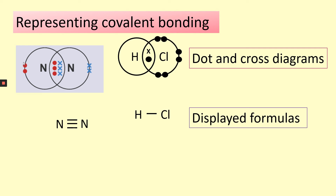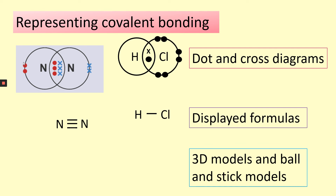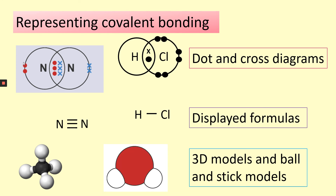Another way of showing covalent bonding is 3D models and ball-and-stick models. On the left you can see a ball-and-stick model of a hydrocarbon — one type of atom in the middle shown as dark gray, then the bonds shown with sticks, and at the end of those bonds four individual circles representing the other type of atom. A 3D model is also shown — it could be water or hydrogen sulfide — with one red atom in the middle representing one element and two small atoms at the bottom representing the same type of element.